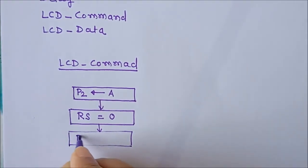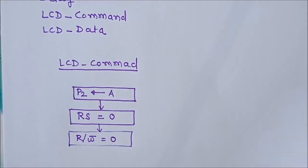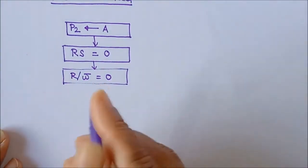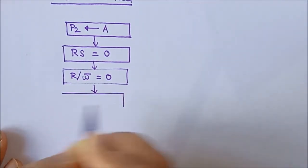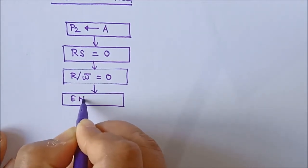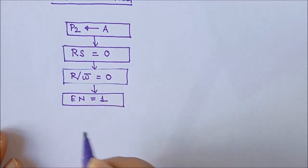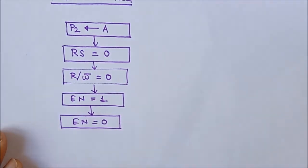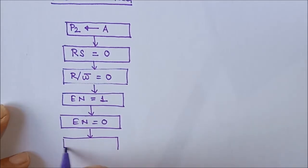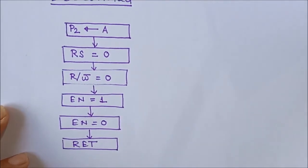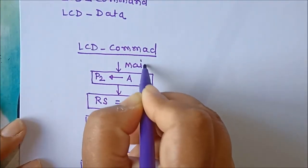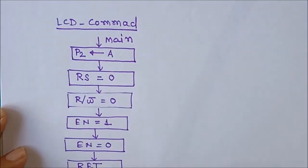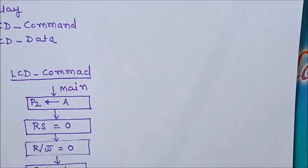Next we send the read/write signal. Since we are writing data in the command register, the read/write signal should be 0. To latch the data placed on port P2, we send the enable signal by first making the enable terminal logic 1, then sending logic 0, giving a high-to-low pulse. Then we return to the main program. The data comes from the main program, all instructions are processed, and then we return back.